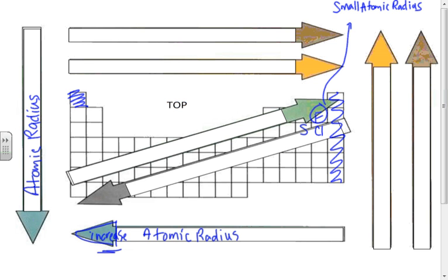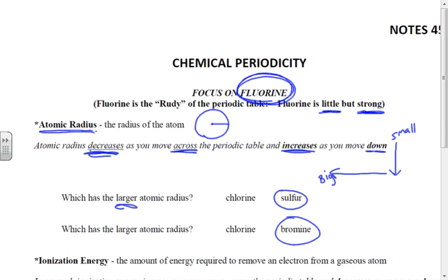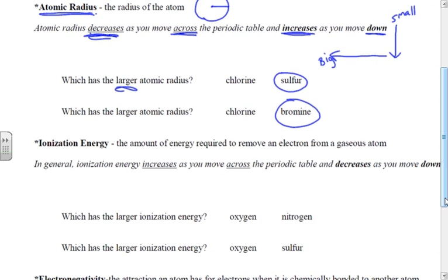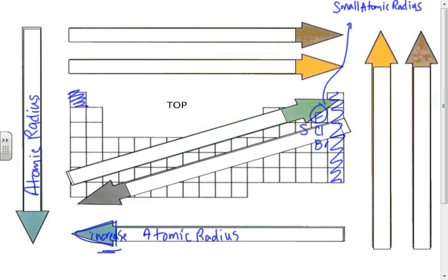The next two we're comparing are chlorine and bromine. Bromine is right below chlorine on the table. If we want the larger radius, it's the one further down — radius increases as we travel down the table — so bromine will have the larger radius. Both of these elements are larger because they're far from fluorine. If fluorine up here is the smallest, and it increases going back to the left and down the table, then in our bottom left-hand corner we have francium, and it's going to have a large atomic radius.